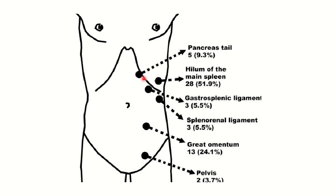Here is a picture of a person showing the thorax, abdomen, and part of the upper thigh, where we can see the accessory locations of the spleen. First, we can see the position of the pancreatic tail — the accessory spleen may be present at the pancreatic tail.